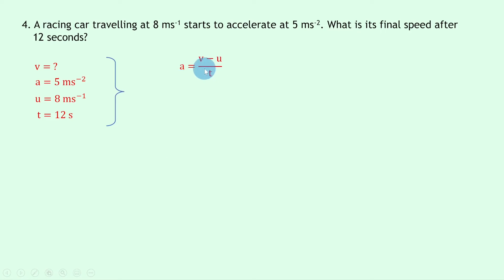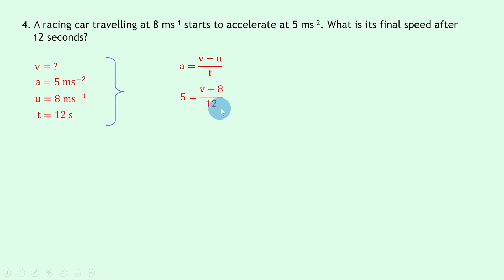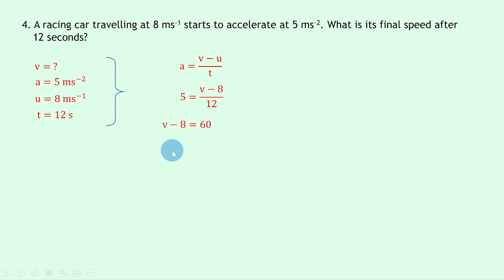Writing down our equation, a equals v minus u over t. I'm going to substitute the numbers straight in rather than rearrange letters. So we've got 5 equals v minus 8 divided by 12. Multiplying both sides by 12 to clear the denominator gives v minus 8 equals 60. Then adding 8 to both sides gives v equals 68 meters per second.